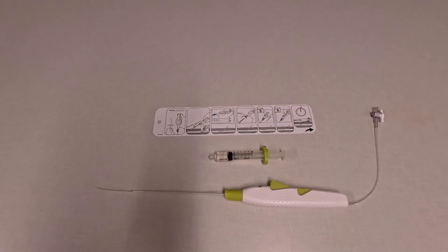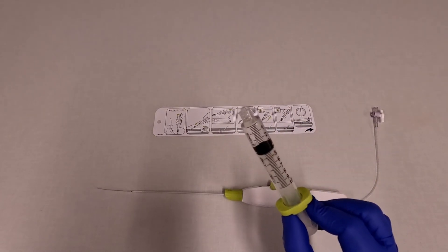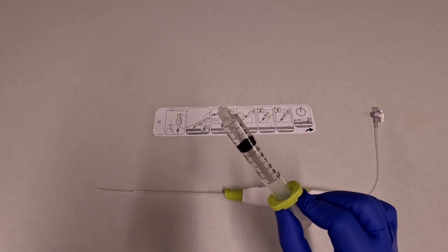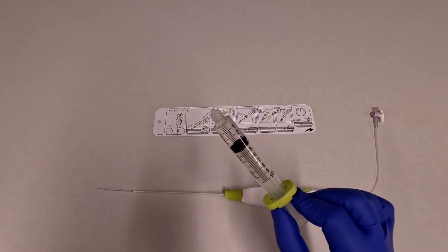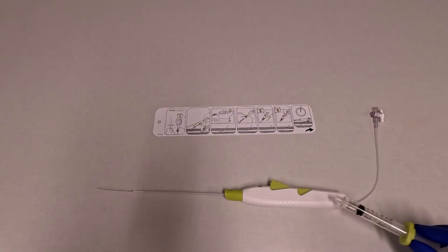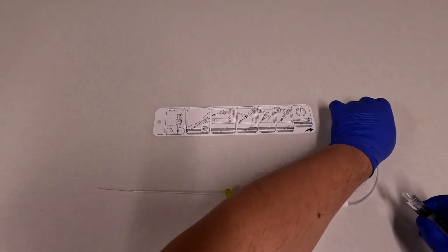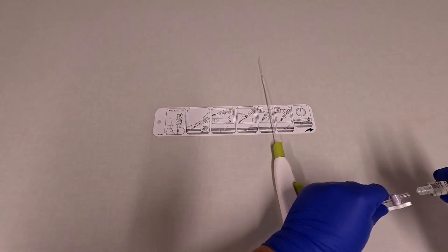For preparation, you first need to get about three cc's of fluid into the syringe. This can be either saline or contrast. And then you attach the syringe to the back of the device.